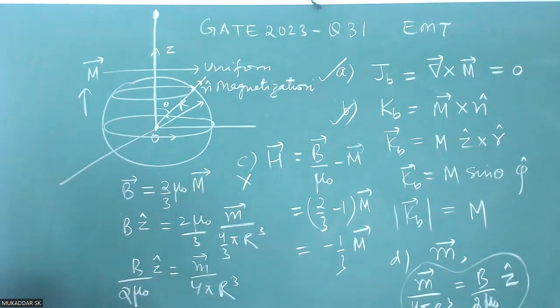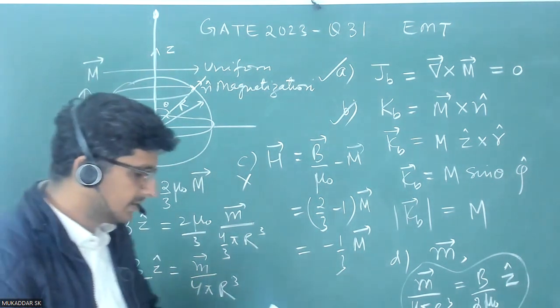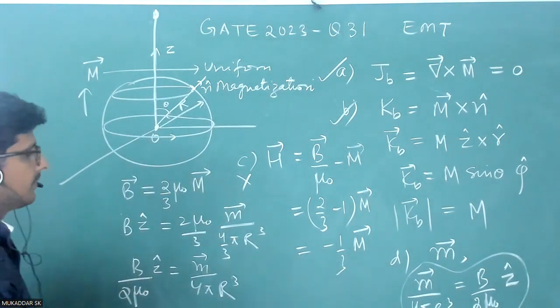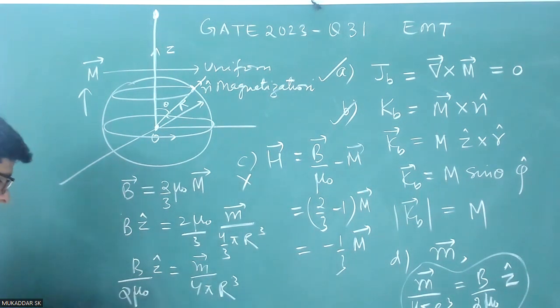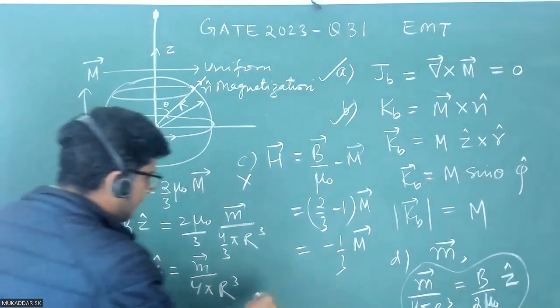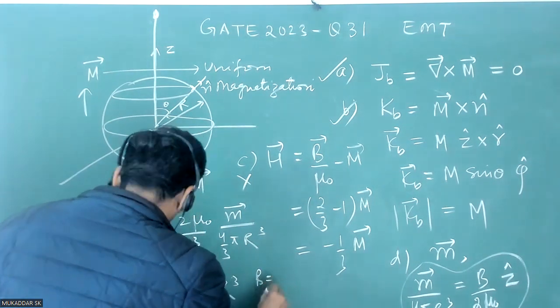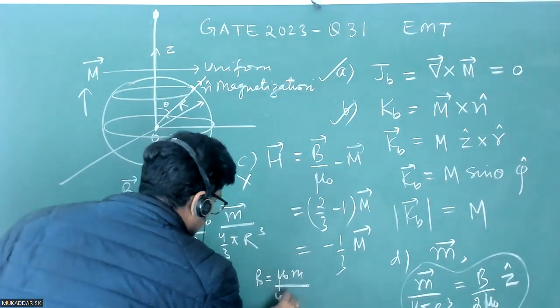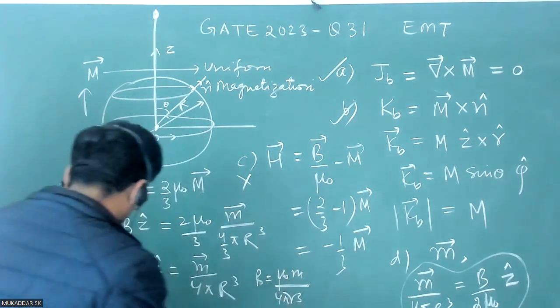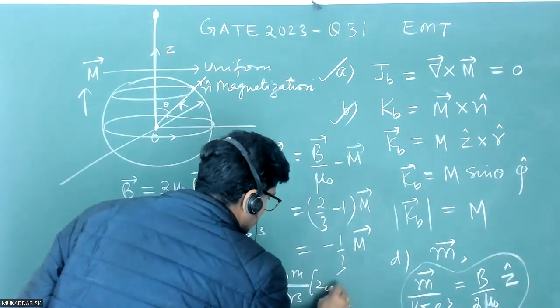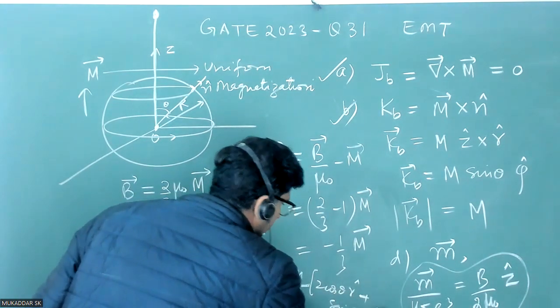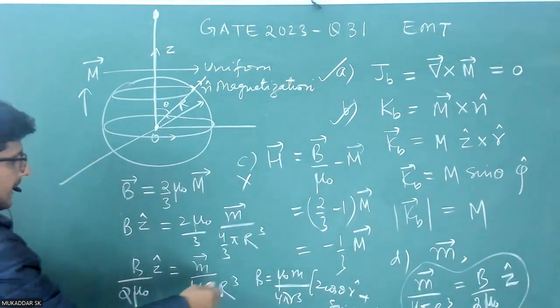So this B is not the magnetic field which is here. They are just asking, please read the language. Far from the sphere, the magnetic field is due to dipole momentum. So that is correct. Because if we write a far field, I can use the formula of dipole moment like B is equal to mu naught M by 4 pi R cubed 2 cos theta R cap plus sin theta theta cap.